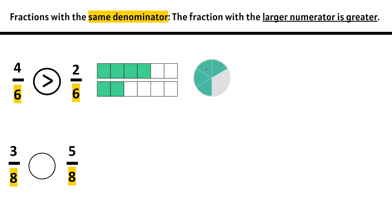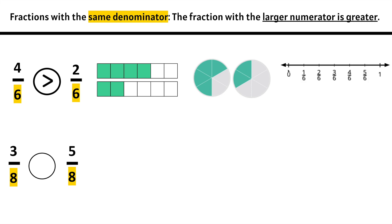Let's look here. We have 1, 2, 3, 4, 5, 6 equal parts with 4 of them shaded — so 4/6. Here we have 1, 2, 3, 4, 5, 6 — same denominator, but only 2 of them are shaded. We can clearly see that 4/6 is greater than 2/6. Here we have a number line from 0 to 1 whole. Let's label 4/6. On this number line, we have 0 to 1 whole broken up into 6 equal parts, and we only have 2/6. We can see on this number line that 4/6 is greater than 2/6.